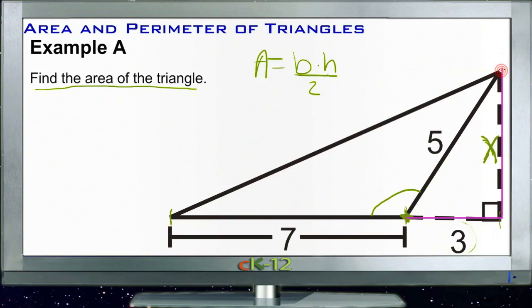And if we do that, we have 2 of the 3 sides of a right triangle. We have 3 units and we have 5 units. So we can use our Pythagorean theorem.